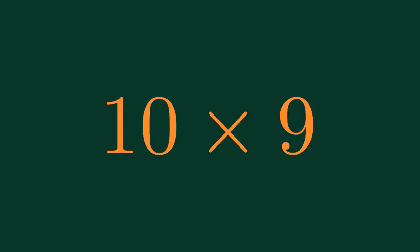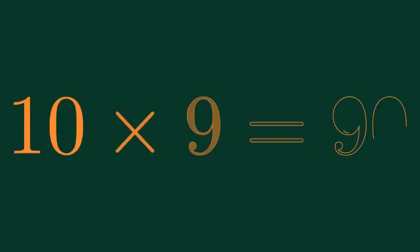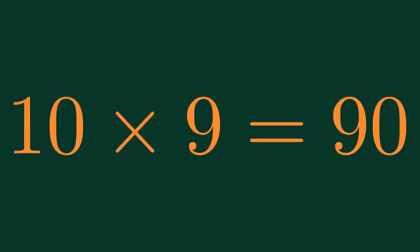What is 10 times 9? 10 times 9 is equal to 90.